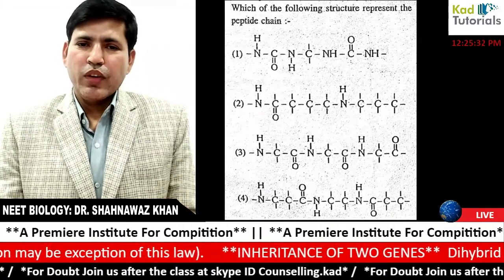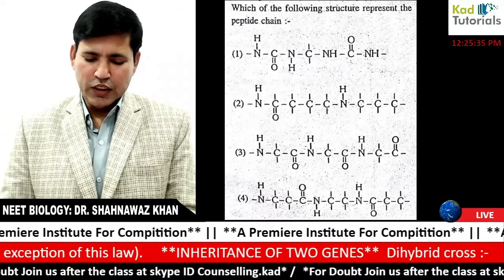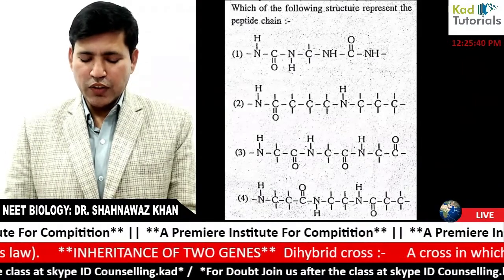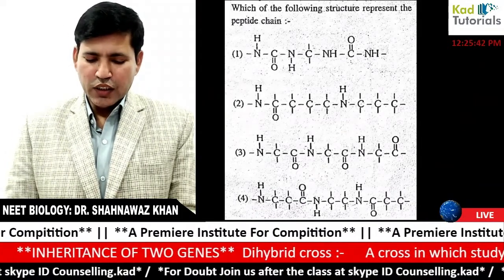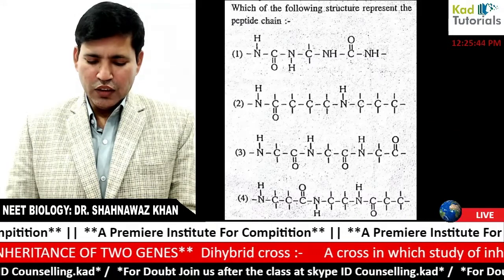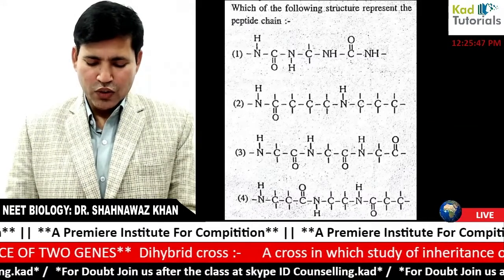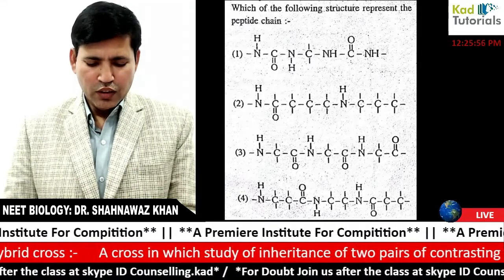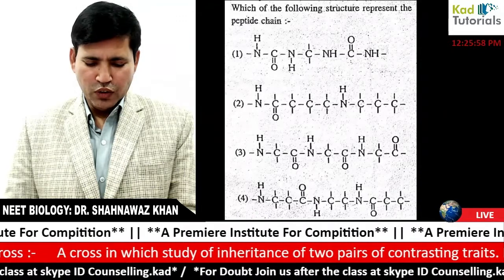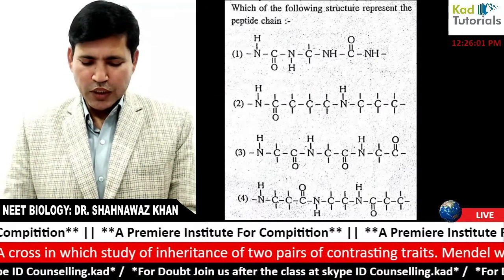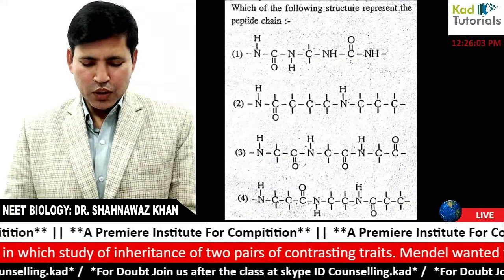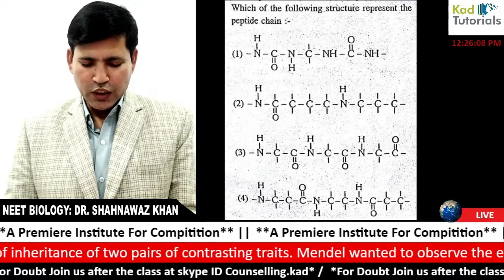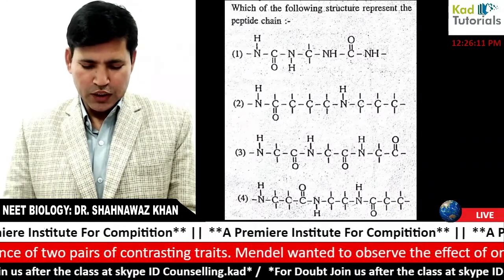Option 1 is correct because the first and second amino acids are both alpha amino acids. Option 3 is incorrect because a beta amino acid is given. Option 4 is incorrect because a beta amino acid is given. Option 2 is incorrect because a gamma amino acid is given.